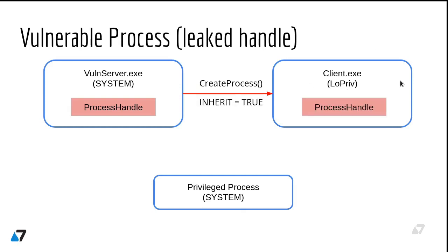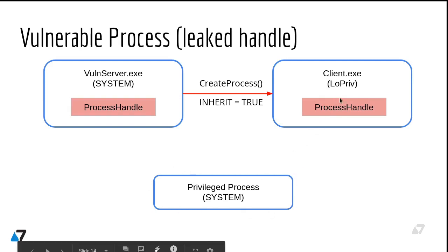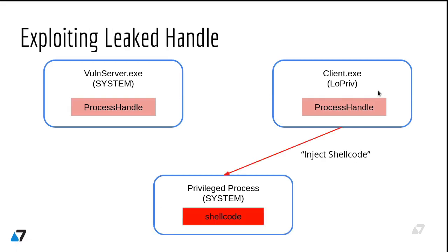The problem lies in whether this CreateProcess call is done insecurely. Specifically, you can set one of the arguments of CreateProcess which tells the operating system that the new process should inherit all open handles from the parent process. In our case, that means the client process inherits an open handle with full access to the privileged process — so from our low privileged process, we actually have access to the memory of that privileged process.